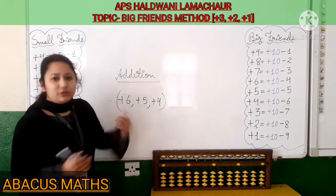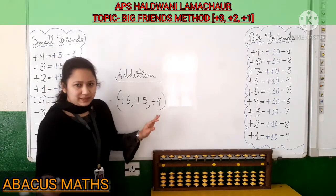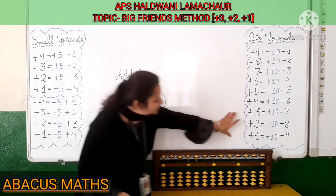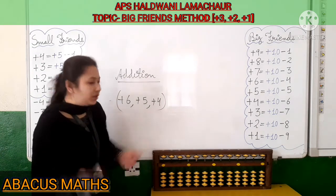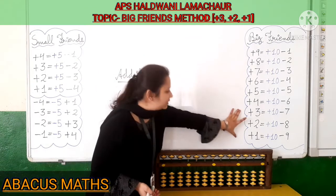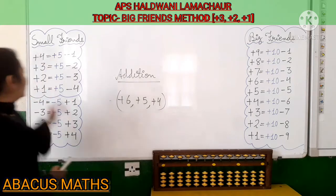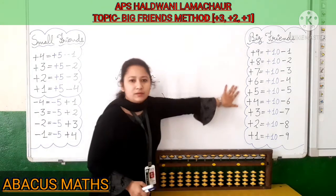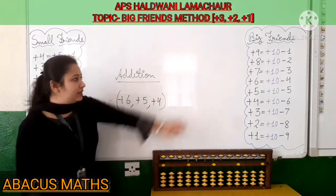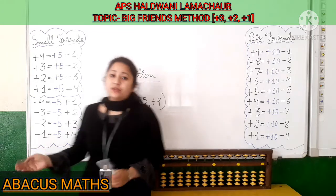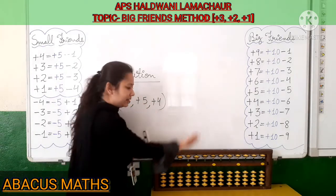Now in my next video, we will do the sums related to Big Friends subtraction formulas. Let's start our topic with the first sum. We will use these 3 formulas. As you know, our today's video is based on the formulas plus 1, plus 2, and plus 3. The old formulas can also appear in the sums, like small friends and other big friends. The formulas you have studied before can also come again, so these big friends addition formulas and small friend formulas should be in your fingertips.